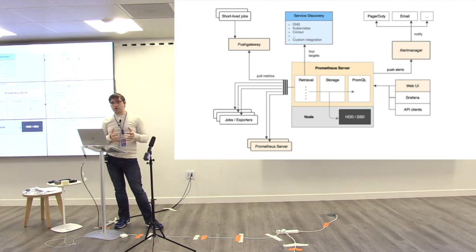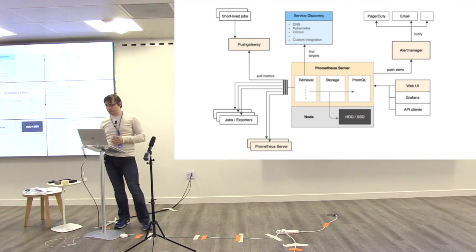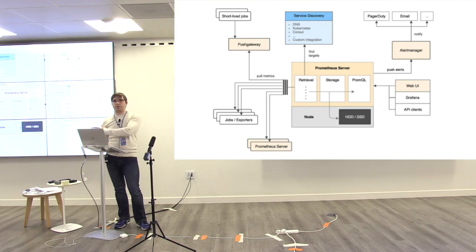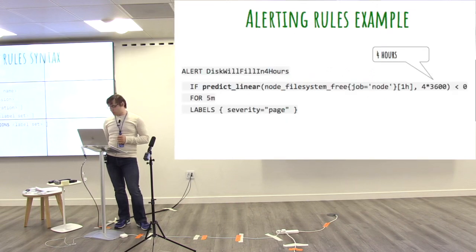That's another piece of the architecture — the alert manager. Alert manager is another component that Prometheus ships, not inside the same binary. It's a separate project, but it's the place where all the alerts you write will arrive. It's another station where those alerts can be filtered, and only then you decide whether those alerts should be paged to somebody, sent via SMS, or silenced, because for example there's a maintenance window going on.